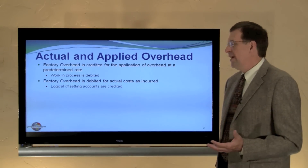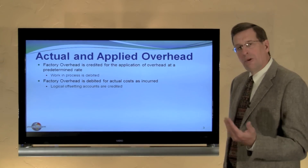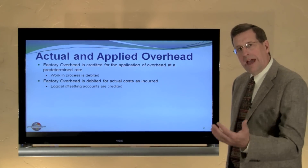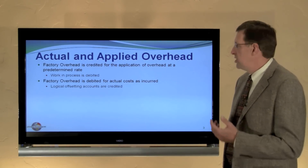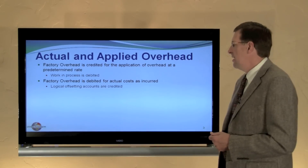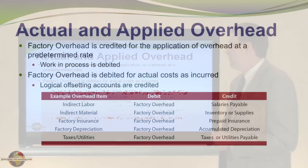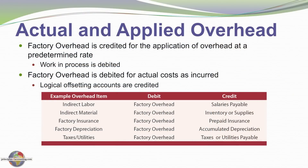We've seen the credit to factory overhead when we apply overhead to production. Now let's look at the debit side. The debits relate to a variety of overhead costs: indirect labor, indirect material, and other items like insurance, factory depreciation, taxes, and utilities.